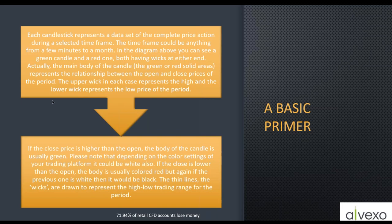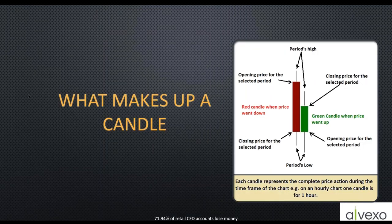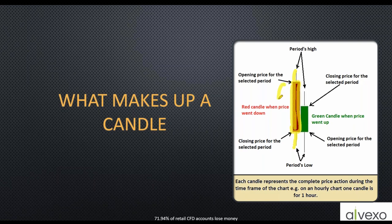Each candlestick represents a complete data set of price action during the selected time frame. Each one of these candles represents the open, the high, the low, and the close of that time period. On a one-hour chart, this would be the high, low, close, and open of that one-hour period. If price fell from open to close, we color that candle red. If price climbed from open to close, we use a green candle - so green means the market moved up, red means it was a bearish session.